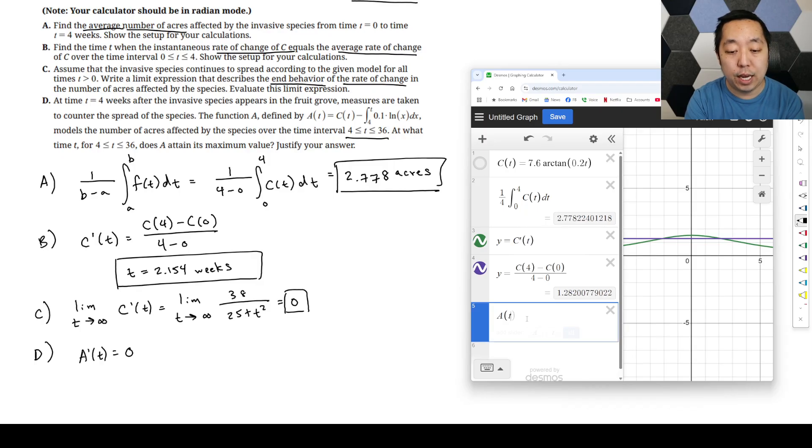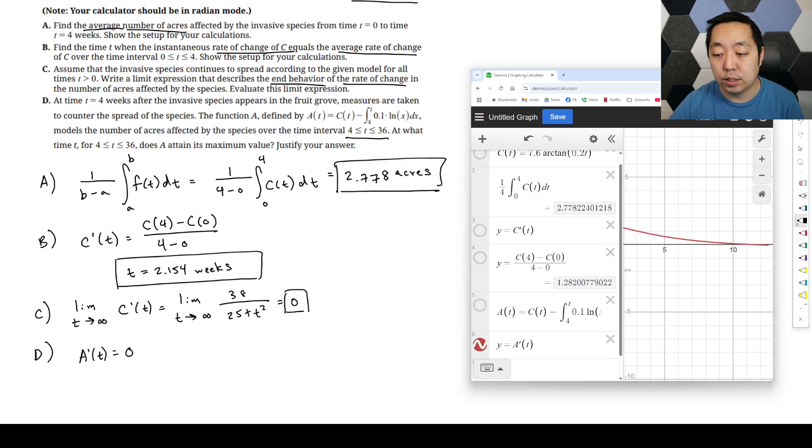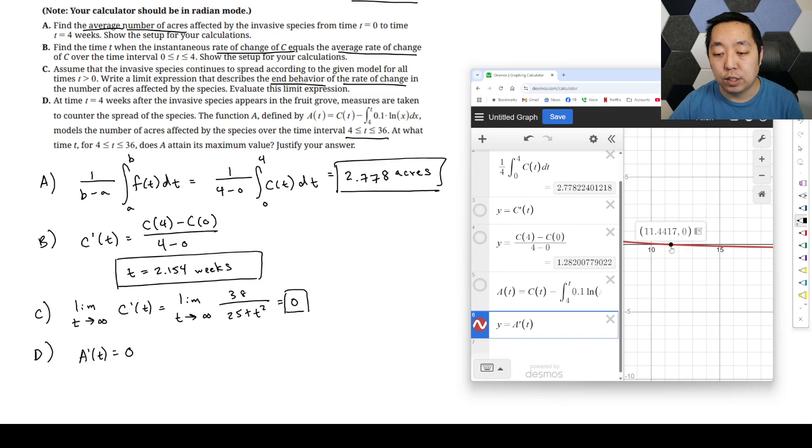Let's say A of T is equal to C of T minus the integral from four to T of 0.1 ln of X dx. So that gives you that function. Then you just want to plot Y equals A prime of T. We can plot and then we just only want to see what A prime is and we just want to see when that's 0. If you click there, that would occur at T is equal to 11.442. That's the only time that occurs.